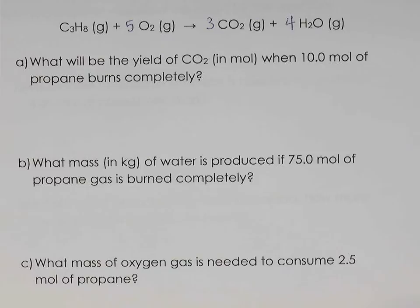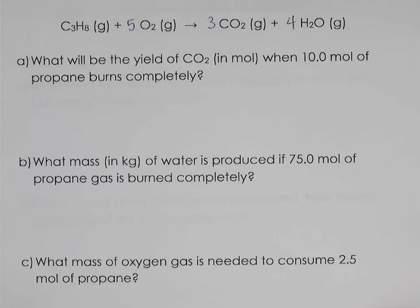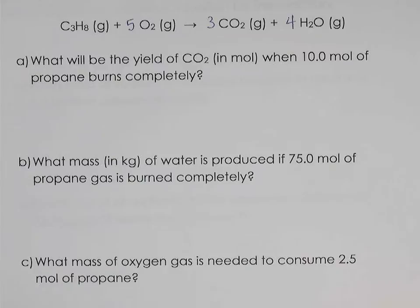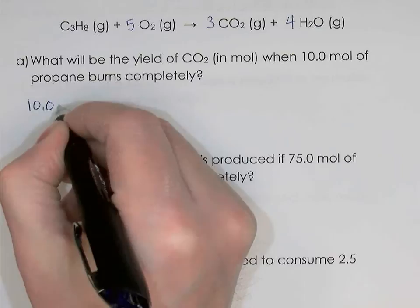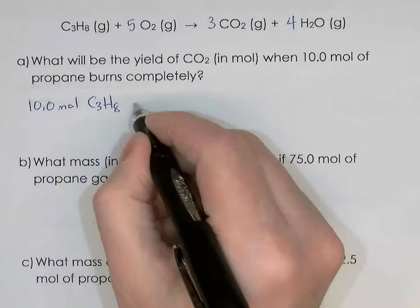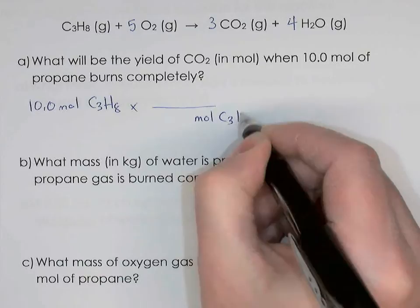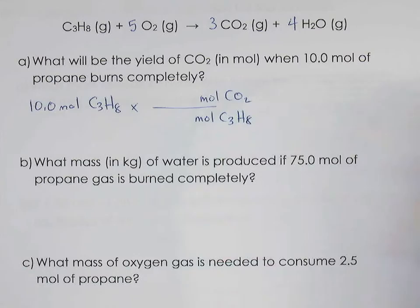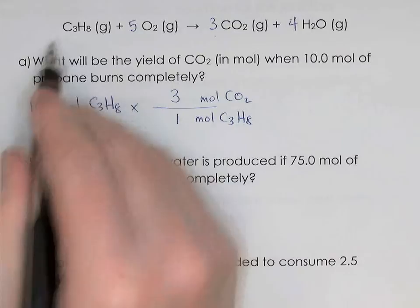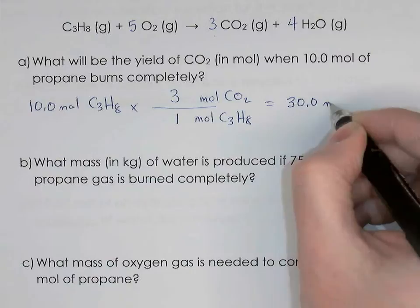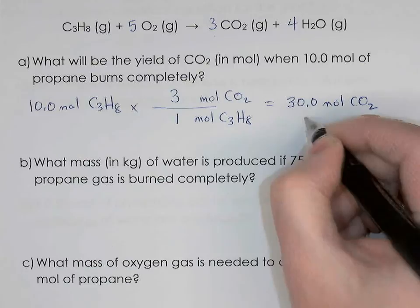What would be the yield of CO2 in moles if 10 moles of propane burns completely? The word 'yield' means 'produced.' Starting with 10.0 moles of C3H8, convert to moles of CO2 using the mole ratio: 3 moles of CO2 for every 1 mole of propane. So 10 × 3 = 30.0 moles of CO2 would be produced.